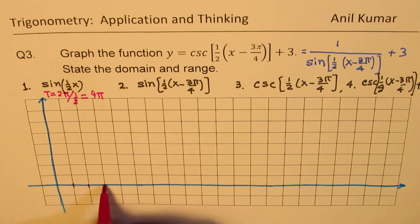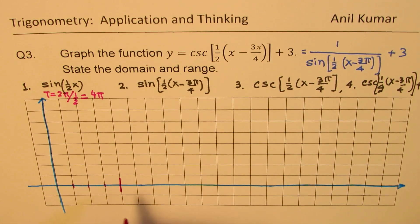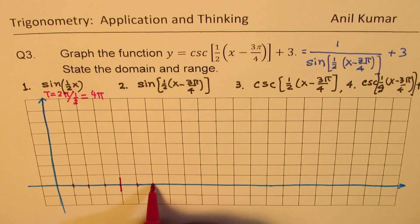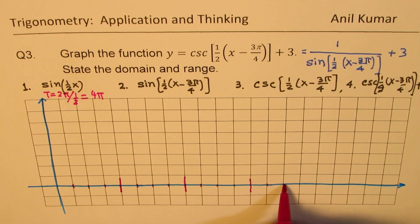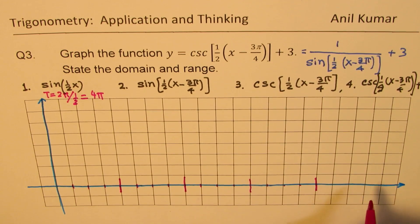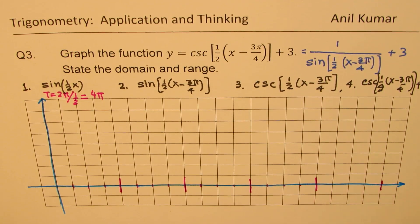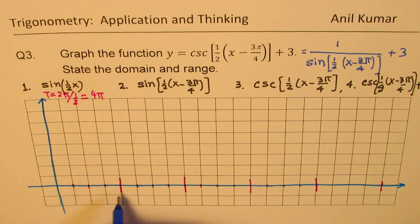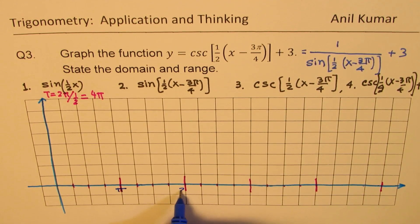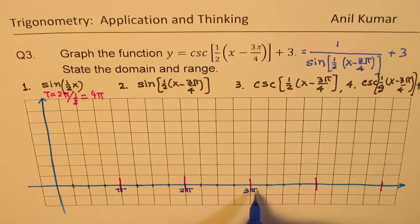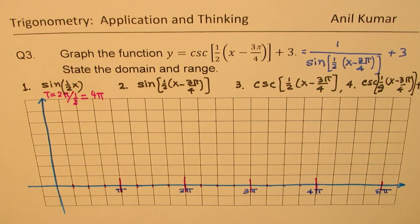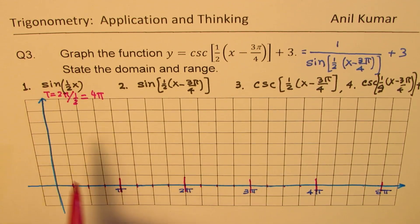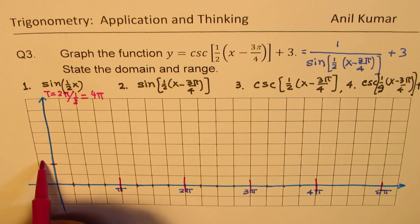Since we need to translate by 3π/4, I'll divide π into 4 equal parts on the x-axis, marking π, 2π, 3π, 4π, and 5π. We'll sketch one cycle of sin(½x). The amplitude is 1, so let this be 1 and this be -1.